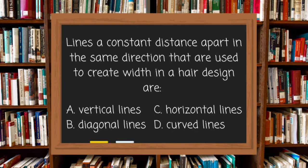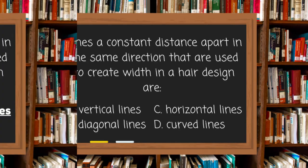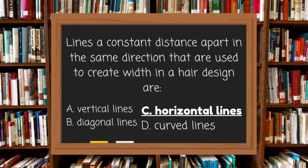Lines a constant distance apart in the same direction that are used to create width in a hair design are: A. Vertical lines, B. Diagonal lines, C. Horizontal lines, or D. Curved lines. The answer is C, horizontal lines. Remember, horizontal lines add width to a design.